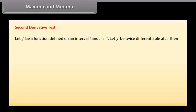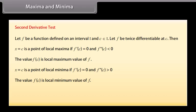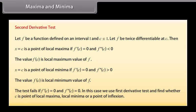Second derivative test: Let f be a function defined on an interval i, with c belonging to i, and let f be twice differentiable at c. Then: x equals c is a point of local maxima if f dash of c equals 0 and f double dash of c is less than 0, and f of c is the local maximum value. x equals c is a point of local minima if f dash of c equals 0 and f double dash of c is greater than 0, and f of c is the local minimum value. The test fails if f dash of c equals 0 and f double dash of c equals 0; in this case, use the first derivative test to determine whether c is a point of local maxima, local minima, or inflection.